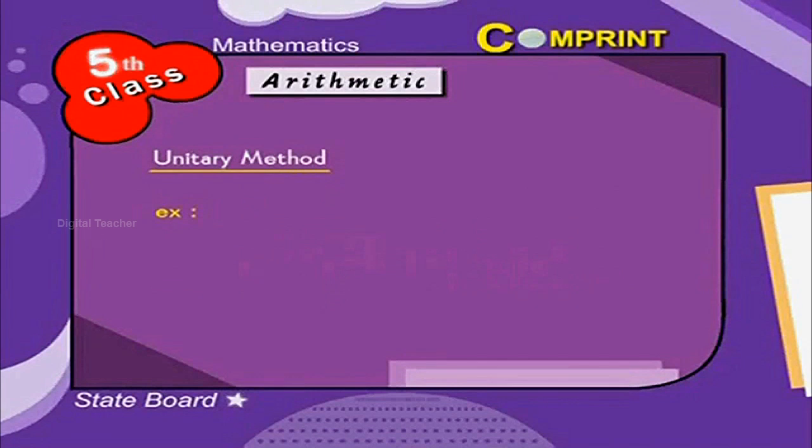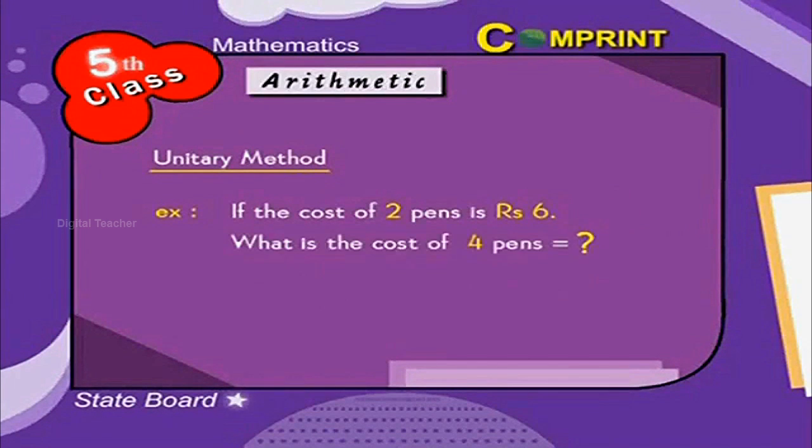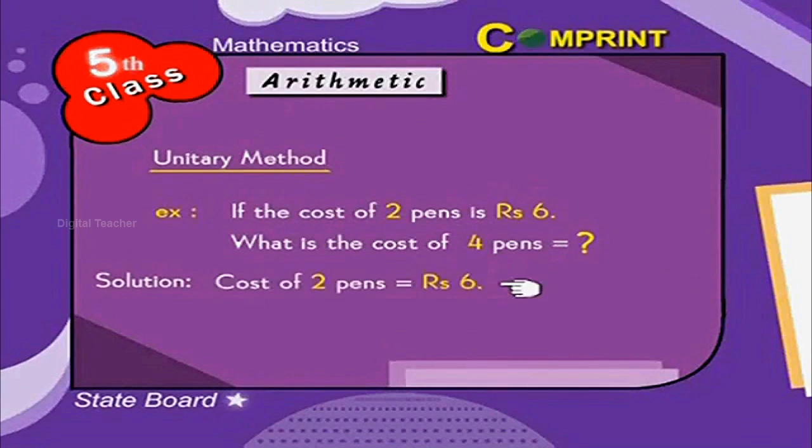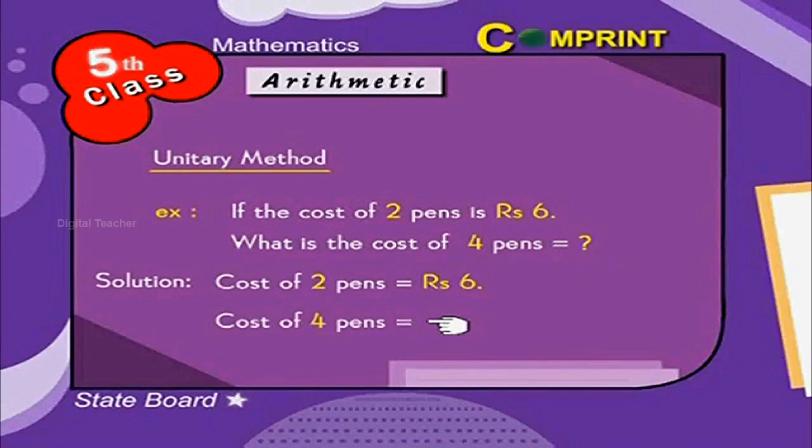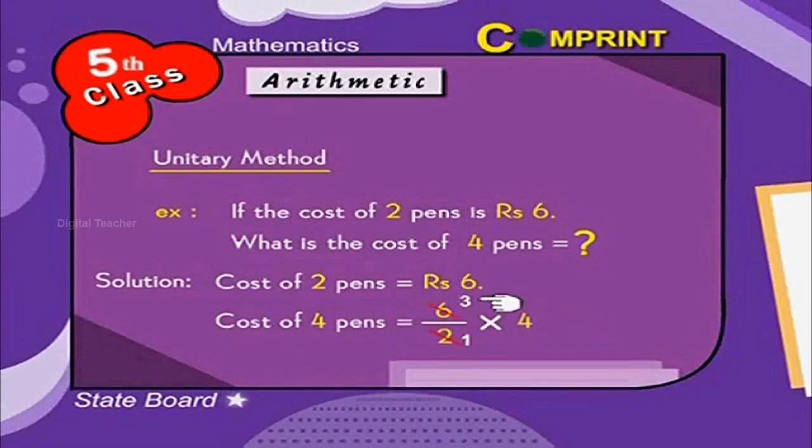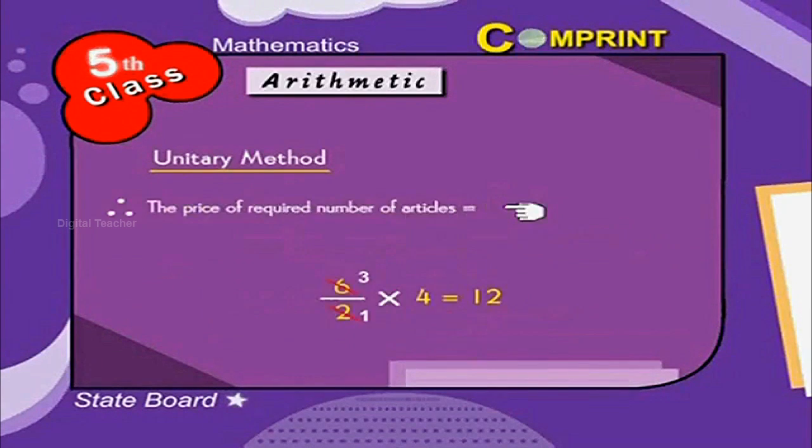For example, if the cost of 2 pence is 6 rupees, then what is the cost of 4 pence? Look at the solution. Cost of 2 pence is equal to rupees 6. Then cost of 4 pence can be written as 6 by 2 into 4. 2 threes are 6, 3 fours are 12, 12 rupees.